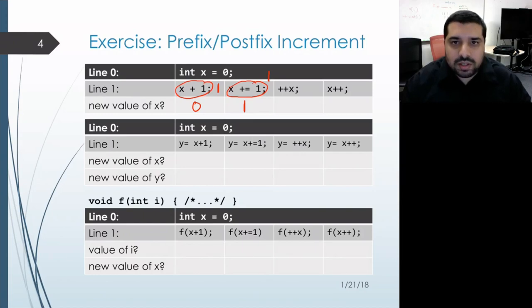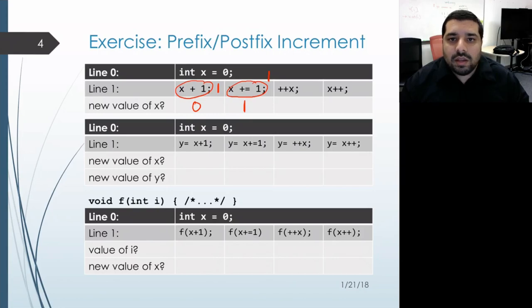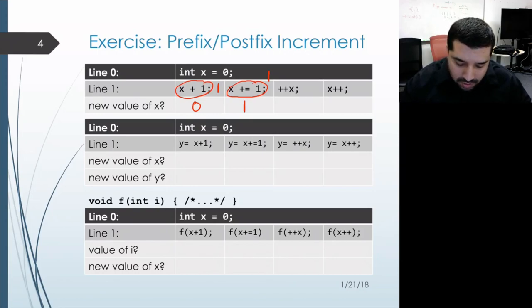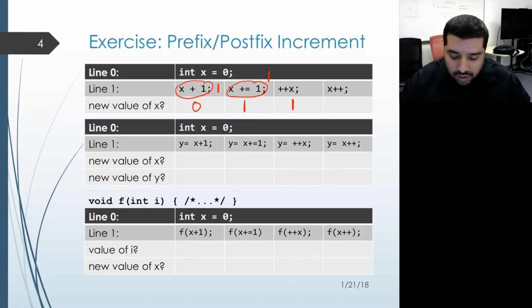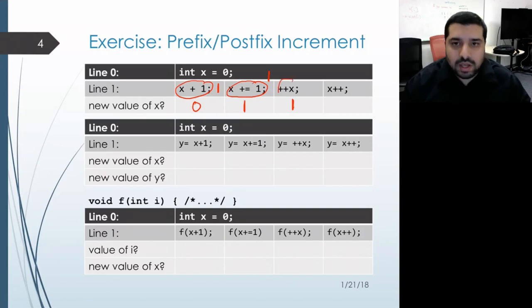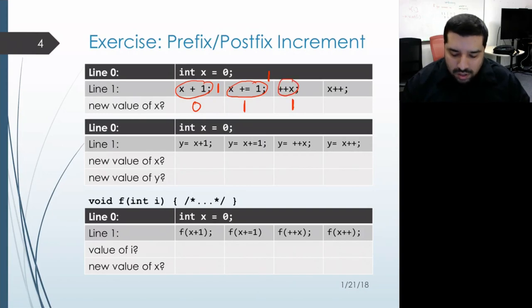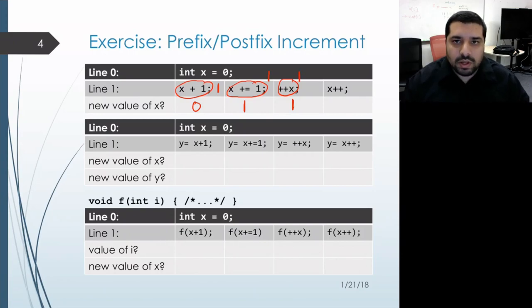Looking at the prefix increment, plus plus x, it's actually exactly the same as x plus equals 1. We have x getting incremented to the value 1, assuming it starts at 0, and then the entire expression as a whole evaluates back to the x object, whose value is 1, so if we were to print that out we would get 1.